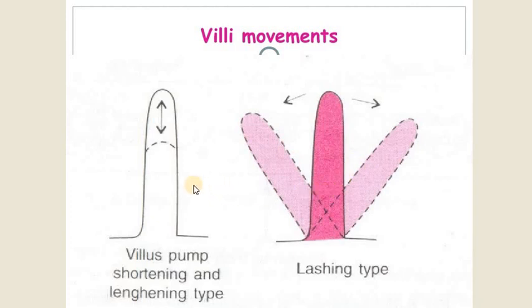The next one is pumping movement or villus pump. It is also known as shortening and lengthening type of movement. In this movement, all the muscles wrapped around the villus contract simultaneously and the villus gets shortened.